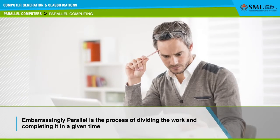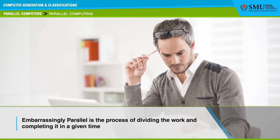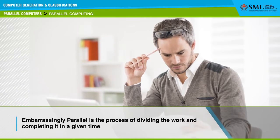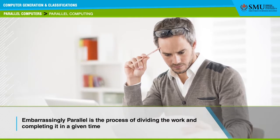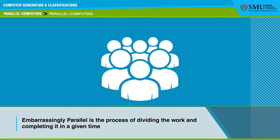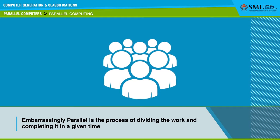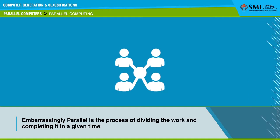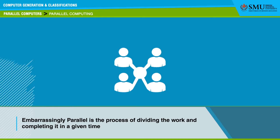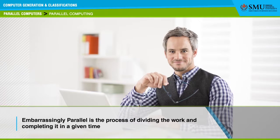Let us now consider a scenario which helps us to understand parallel computing. Assume that you have a lot of work to be done, so you hire 200 workers to finish the work quickly. If the work is 200 separate jobs that don't depend on each other, then they are easily parceled out to the workers.